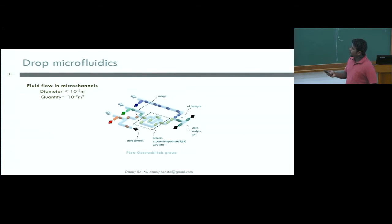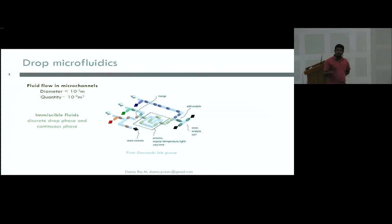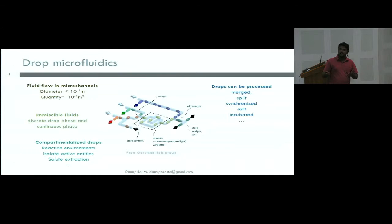When you send in two liquids that do not mix with each other, like oil and water, you'll see that one of the phases breaks into a drop, and the other flows continuously. The fluid that flows continuously is the continuous phase. The one that breaks as a drop is the droplet phase. These drops can function as small reaction environments. They can isolate active entities, and you can manipulate these drops inside these channels.